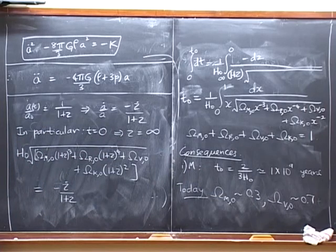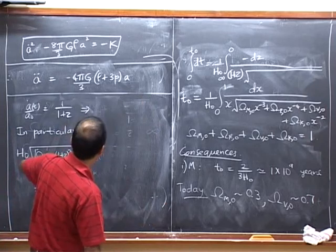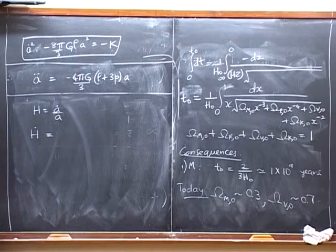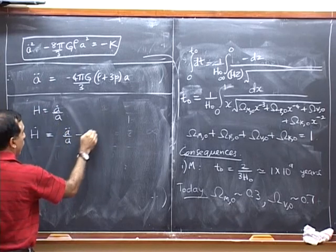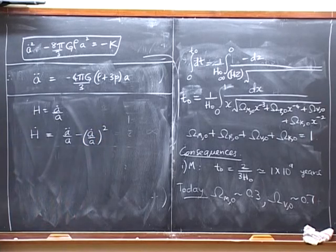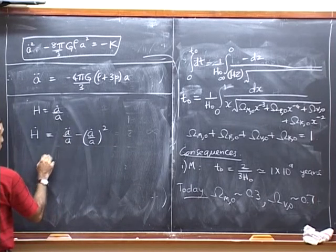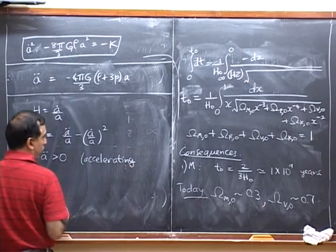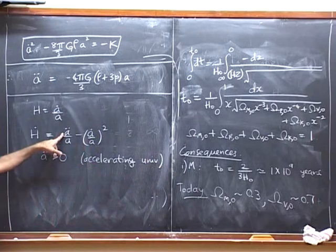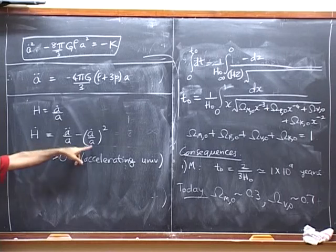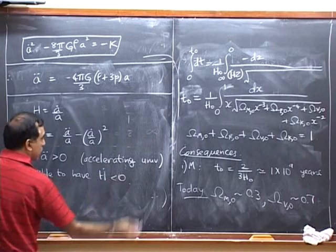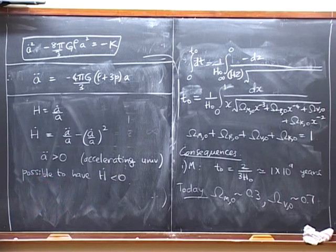Let me close with one small but amusing observation about acceleration. Since H equals A-dot over A, the time variation of H is A-double-dot over A minus (A-dot over A)². Notice that A-double-dot is greater than zero from the accelerating universe experiment. But that does not mean the Hubble constant is increasing, because there is this extra negative term. So it is perfectly possible to have H-dot less than zero - the Hubble constant can be decreasing while the universe is accelerating.